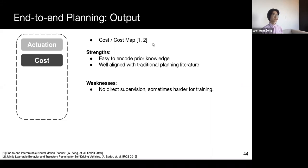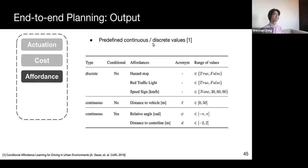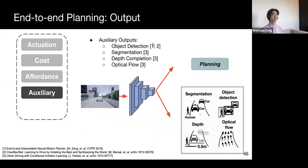In contrast to actuation-based methods, cost-based methods are more interpretable. But one challenge here is that sometimes the training might be harder, since we don't have direct supervision for the cost model. Except for these two main paradigms, the actuation and the cost, there are also other possibilities. For example, a model can output values for a set of predefined affordances, such as distance to centerline or vehicle. Or, a model can also output results for some auxiliary tasks in addition to planning output, such as object detection, or semantic segmentation, or optical flow. This is believed to help the model better understand important semantic information in the scene.